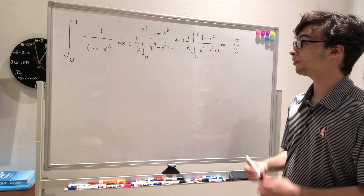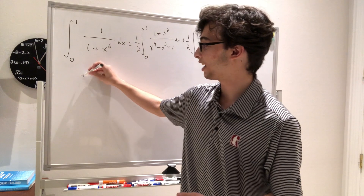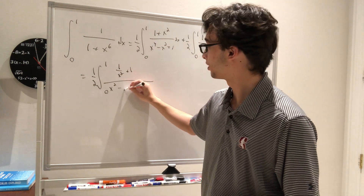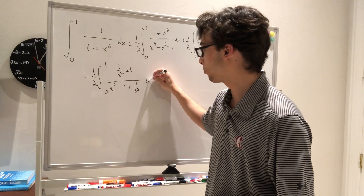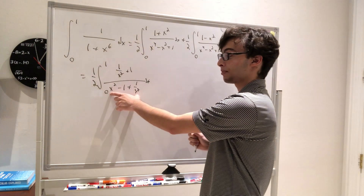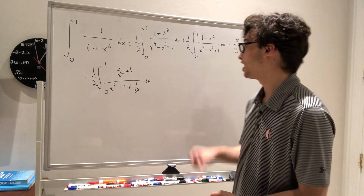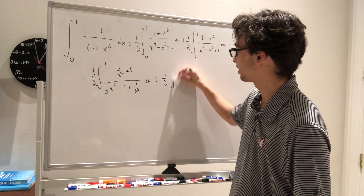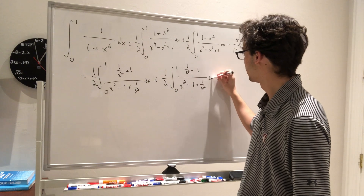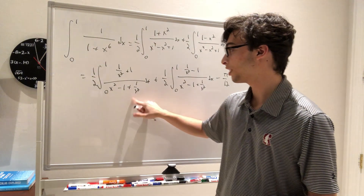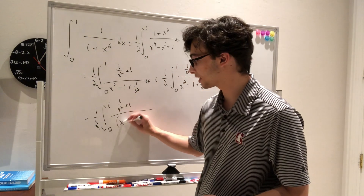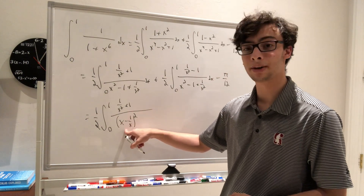Now how do we continue with these two integrals? As I previously said, we can divide by x squared and it will get us somewhere. Doing that, we have one half times the integral from 0 to 1 of (1 over x squared plus 1 over x squared) over (x squared minus 1 plus 1 over x squared) dx. The numerator 1 over x squared plus 1 is the derivative of x minus 1 over x. The denominator can be factored as (1 minus 1 over x) squared plus some constant. We can do the same thing to the second integral.